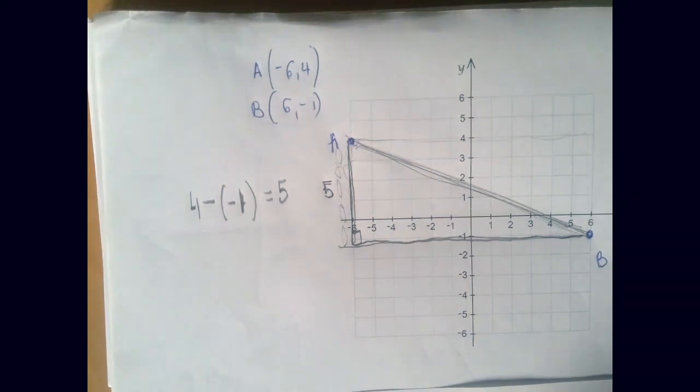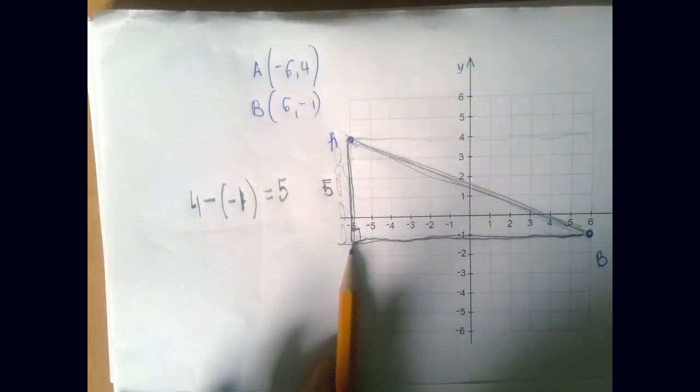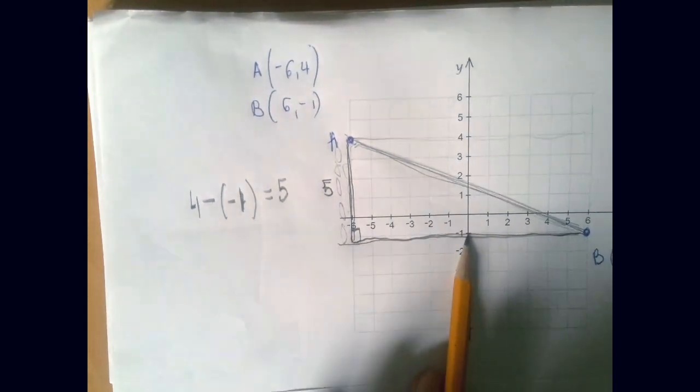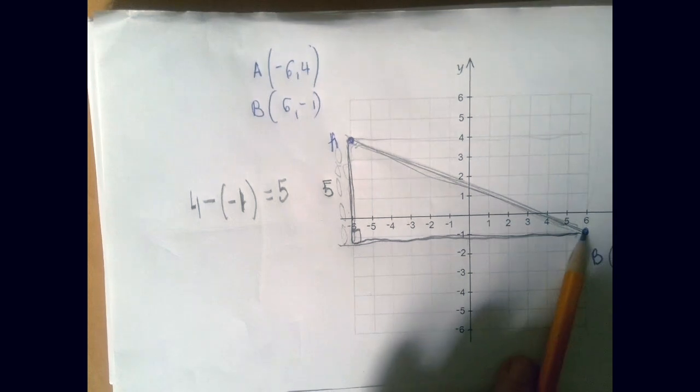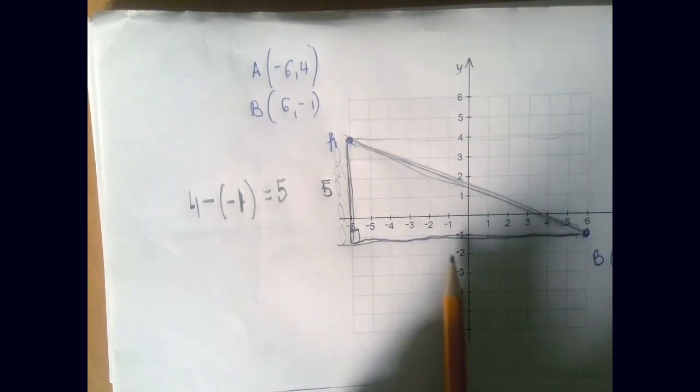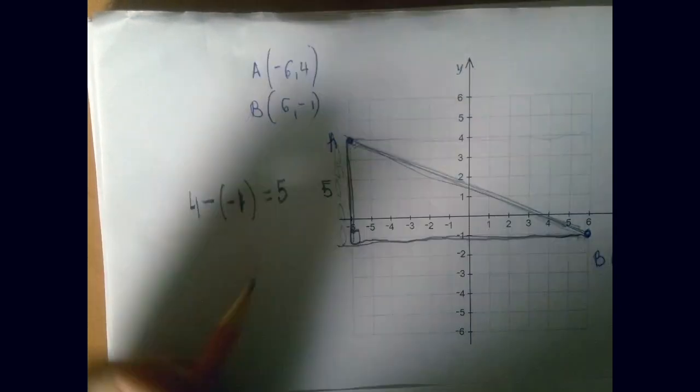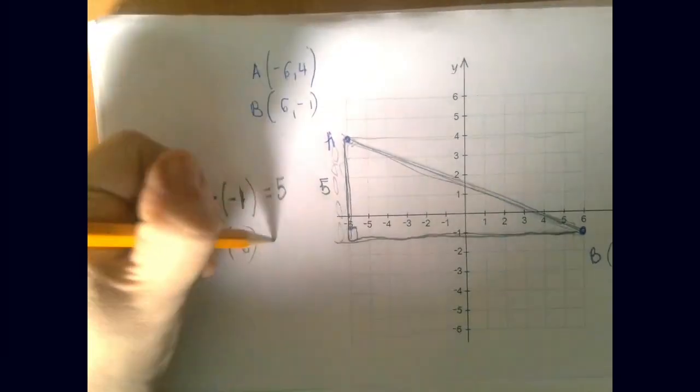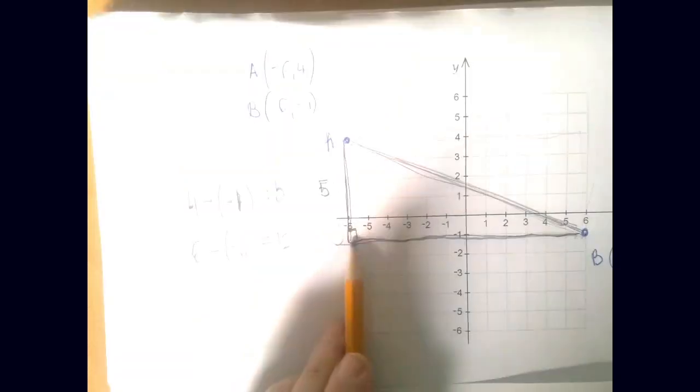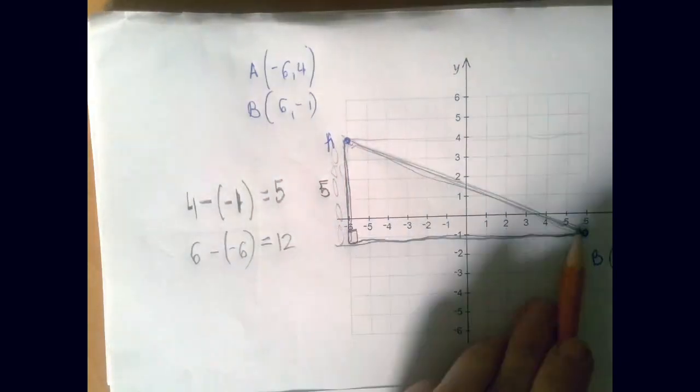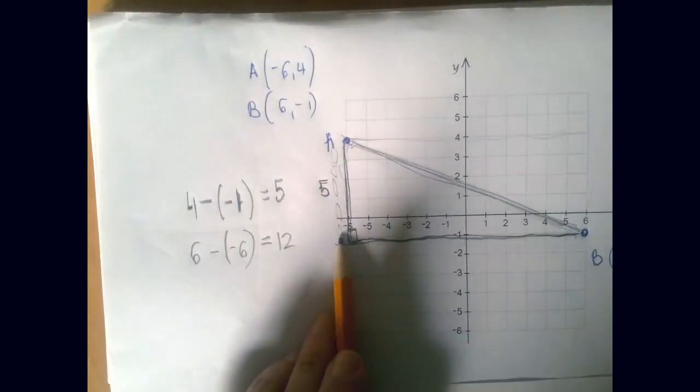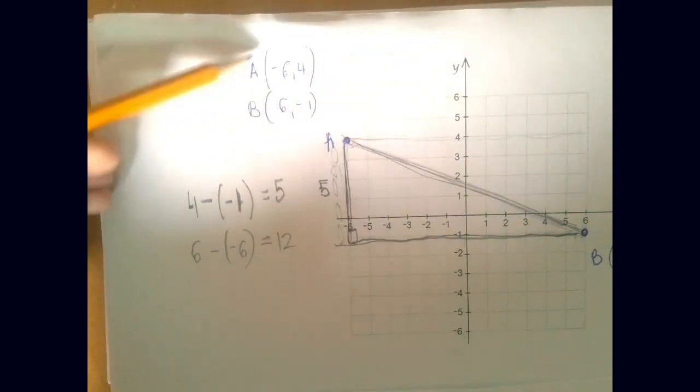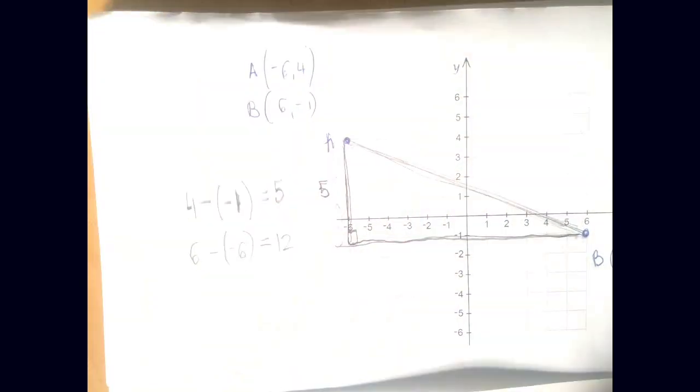Now what about the horizontal side? So we can count, we can also kind of see that from -6 we have to go 6 to reach 0, and another 6 to reach +6. So this is going to be 12 long, which is the same as to say that 6 minus -6. So again, this is about the difference between the x coordinates, and so when you subtract them, you get 6 minus -6 equals 12.